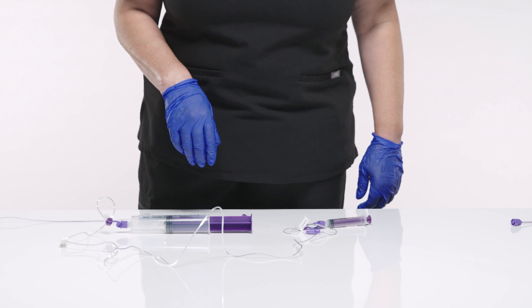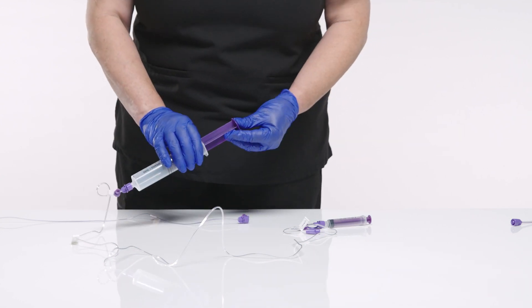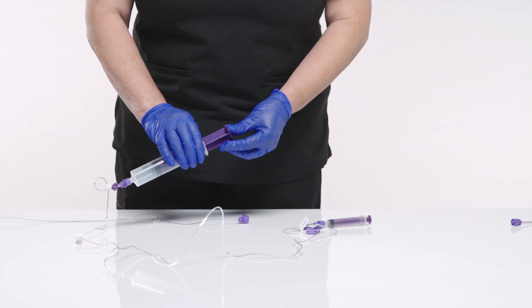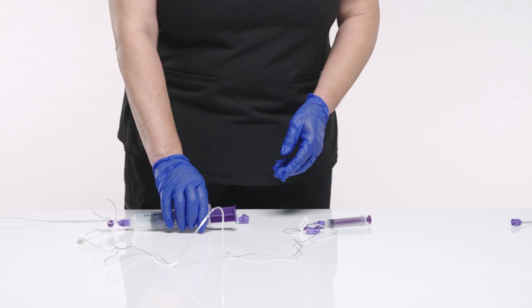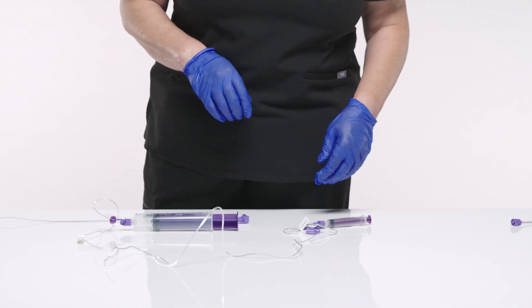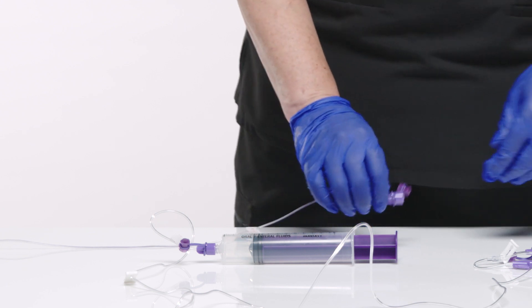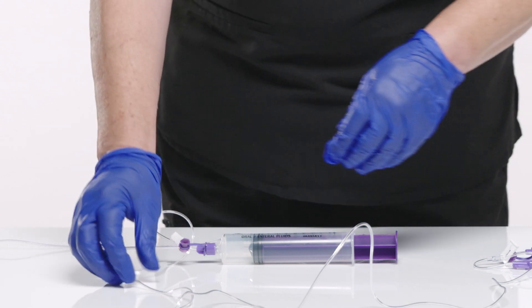To prime the extension set, gently press the plunger of the EnFit syringe until fluid reaches the distal end. The 60-inch extension set will prime with 2 milliliters. Clamp after priming to prevent future flow until ready for the feed.